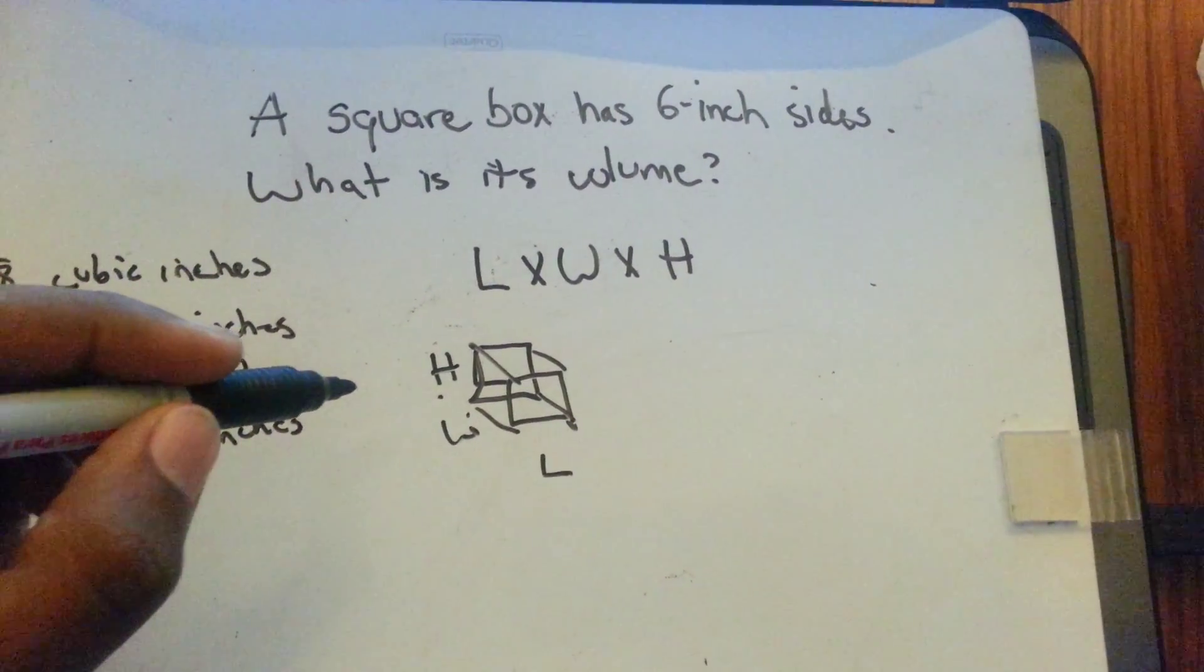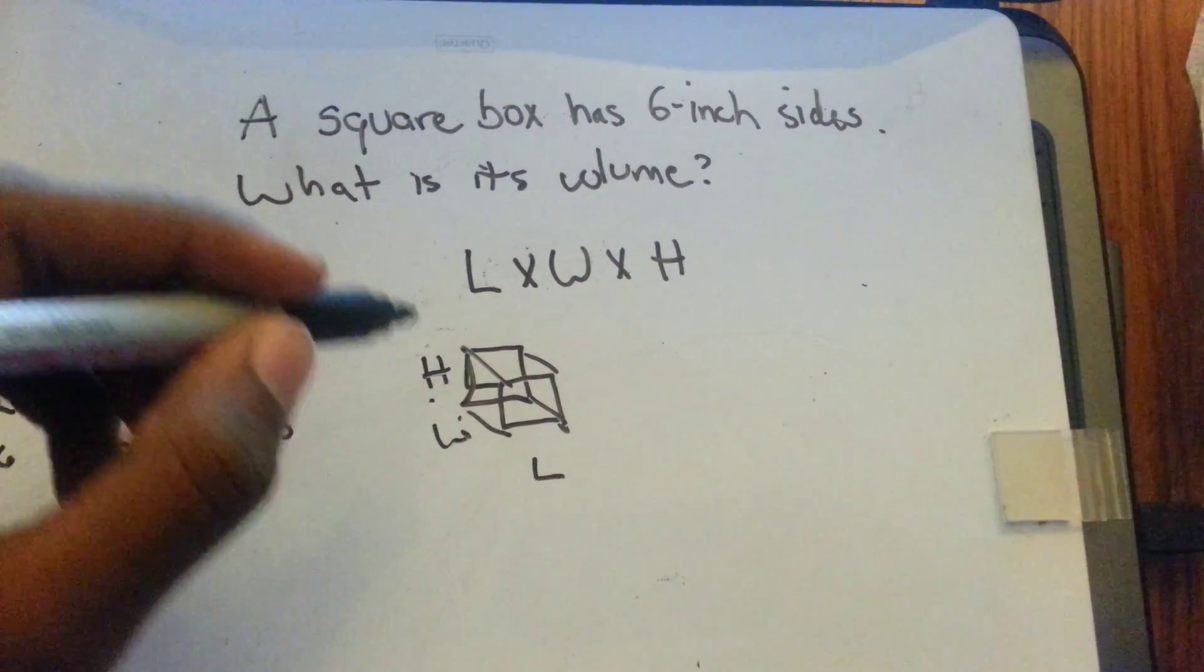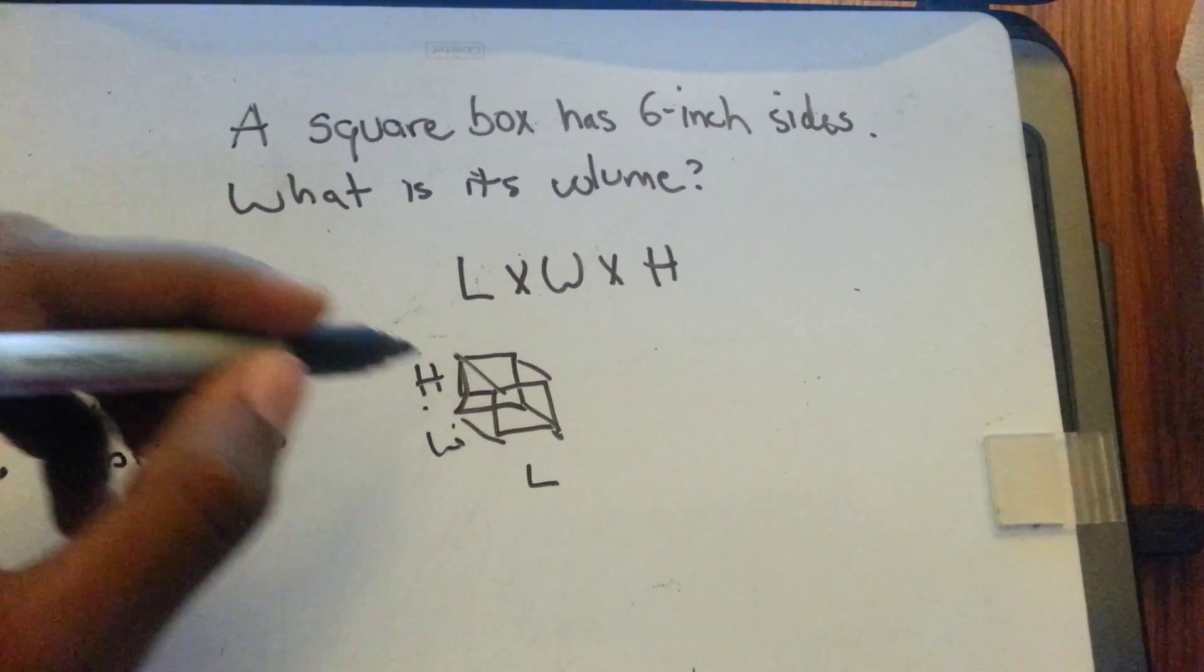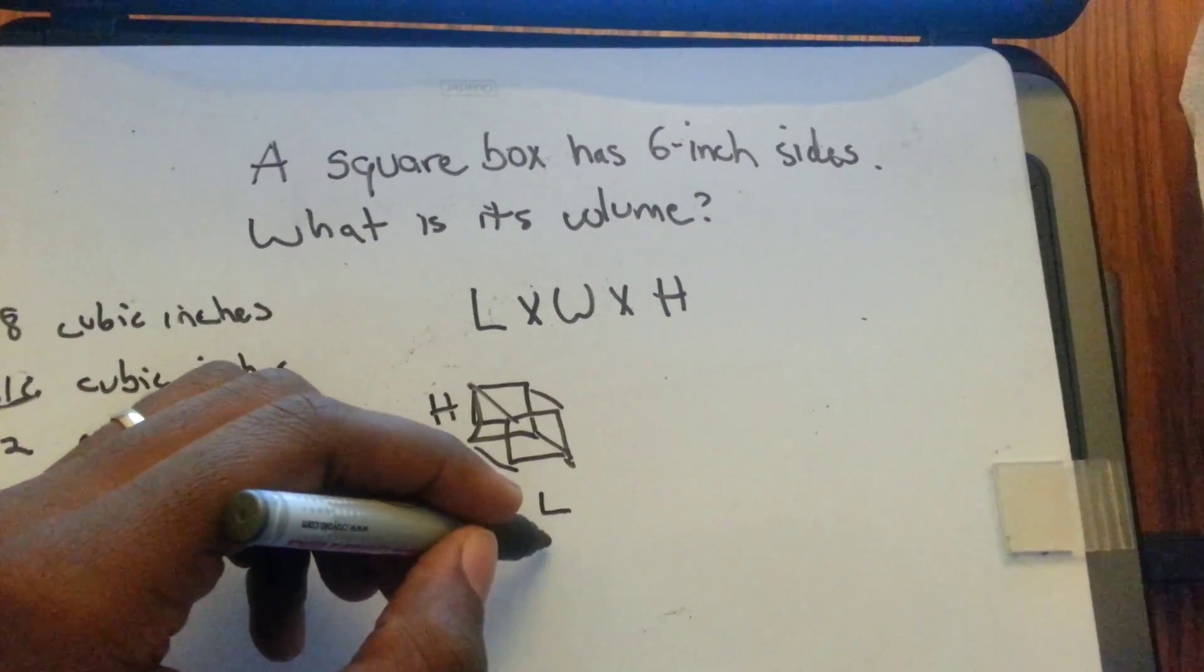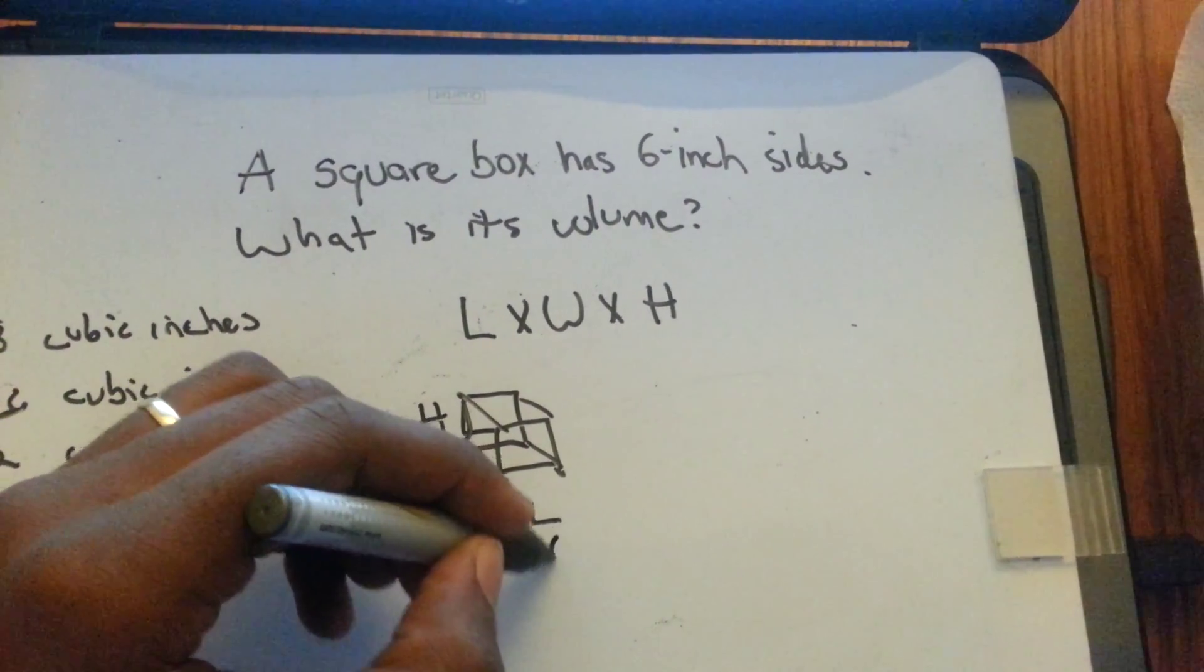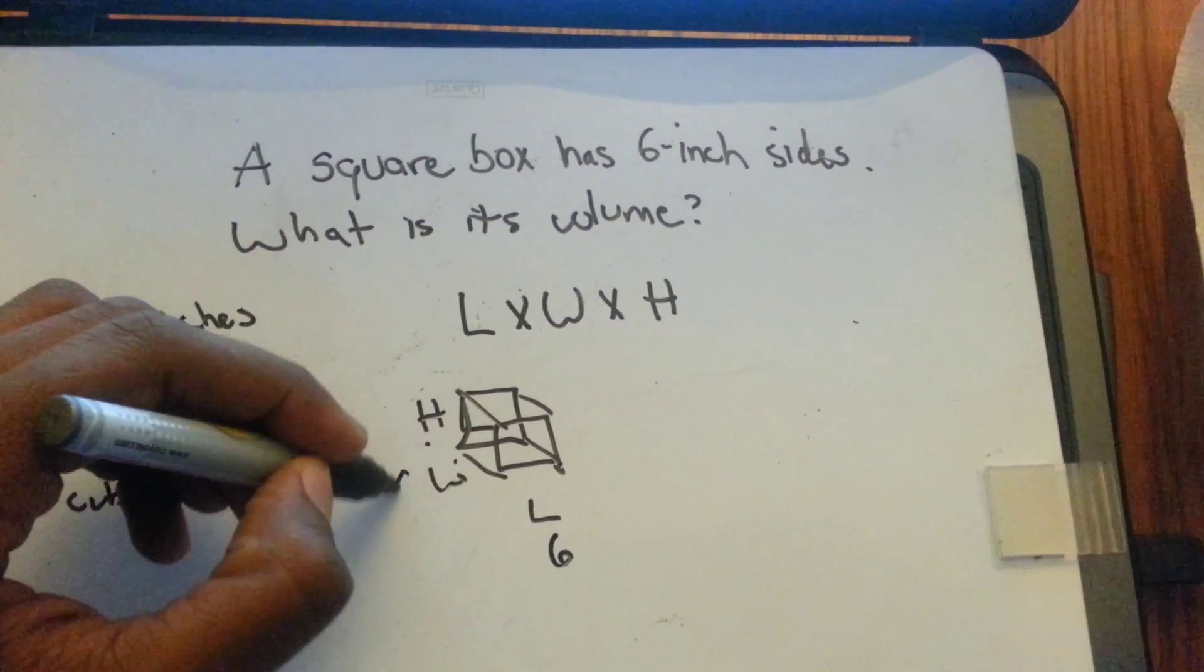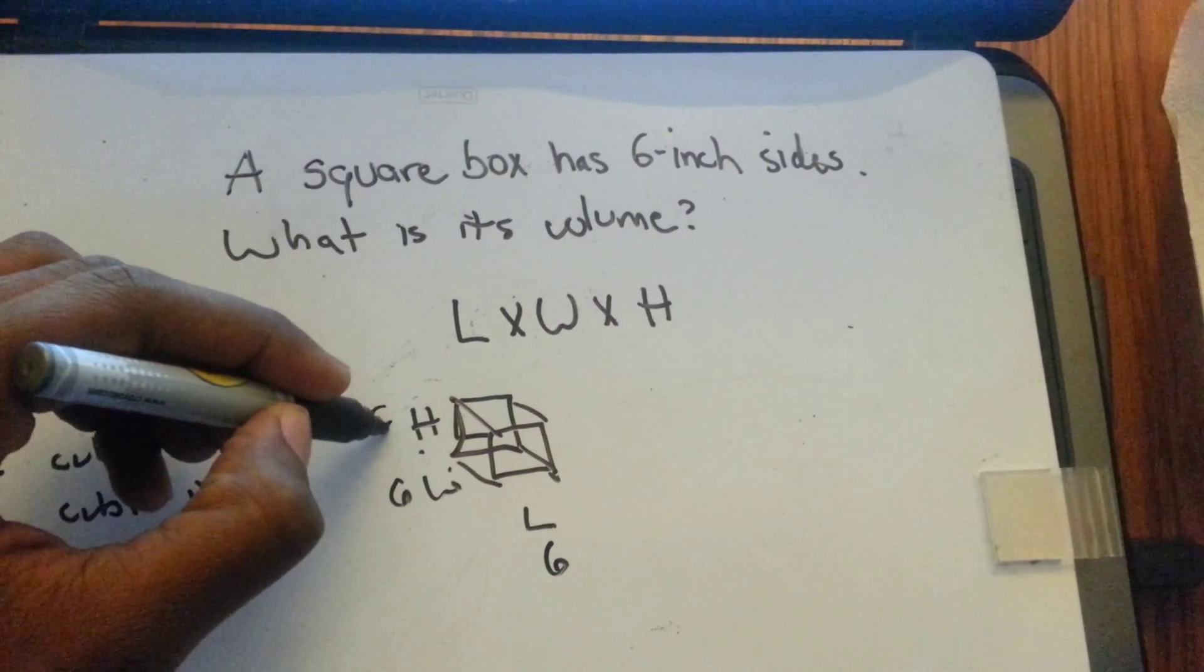Since we're dealing with a cube here, all the sides are the same length. So I say six inch sides square. So this side is six, the width is six, and the height is six.